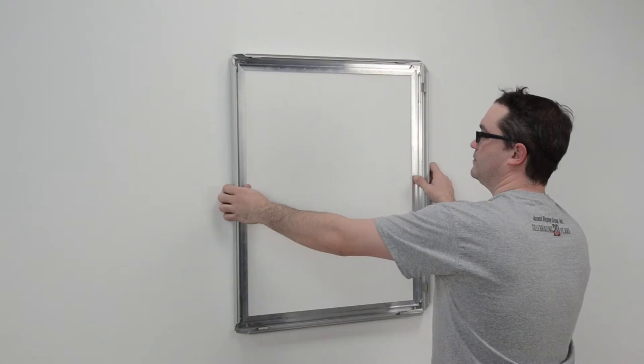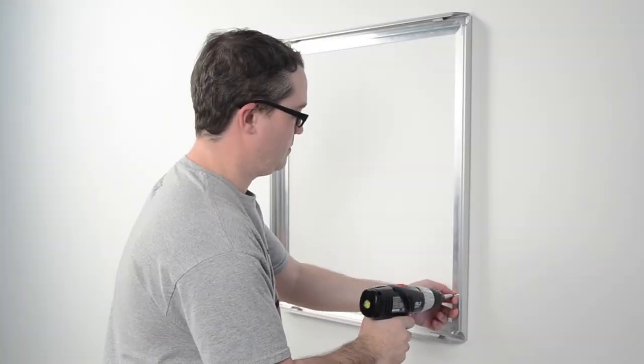Align the snap frame with the wall anchors you just put in. Then, use the hand drill with the Phillips head bit to fasten the screws.